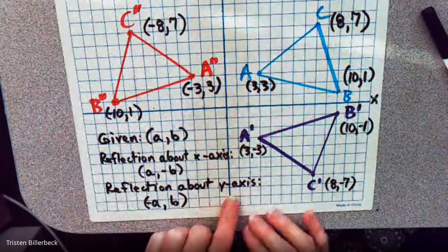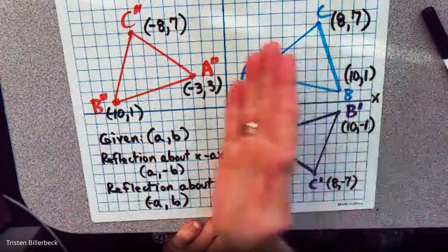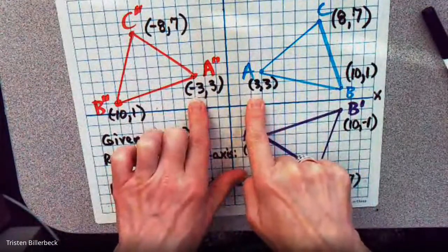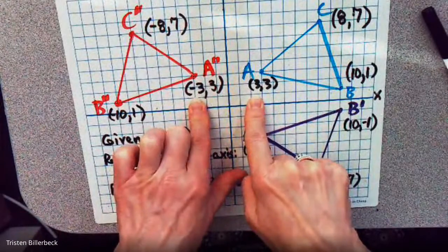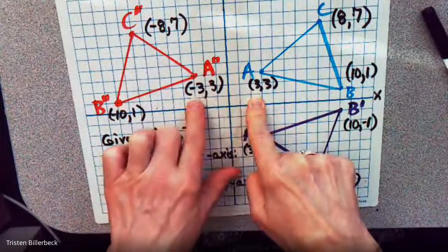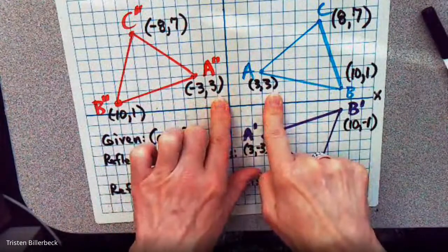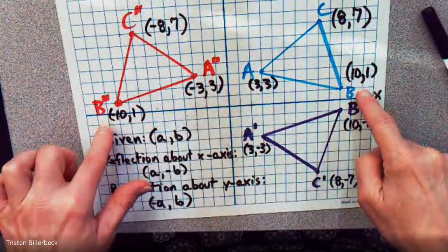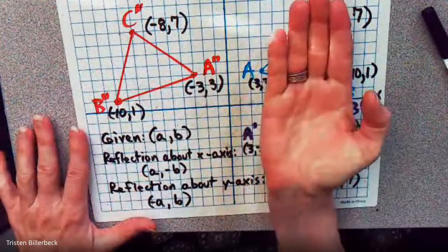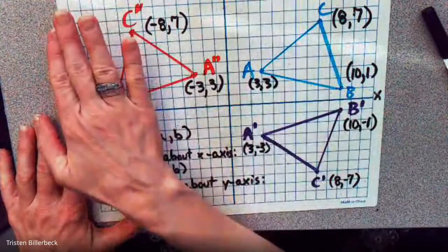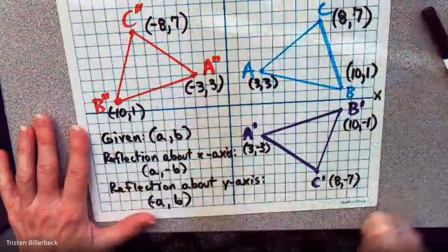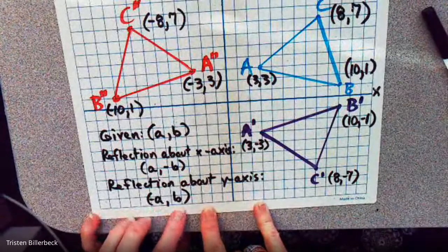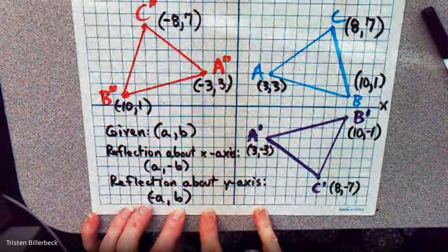For a reflection about the y-axis, look what happens. A prime's x flips sign — so positive 3 becomes negative 3 — and the y is unchanged. Then we have (-10, 1) instead of (10, 1), so the x is changed. We can generalize the rule: (-A, B) is a reflection around the y-axis.